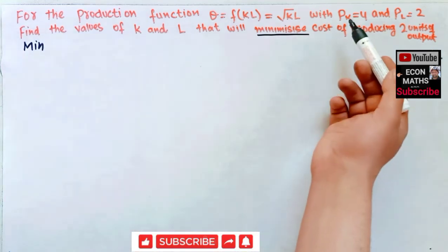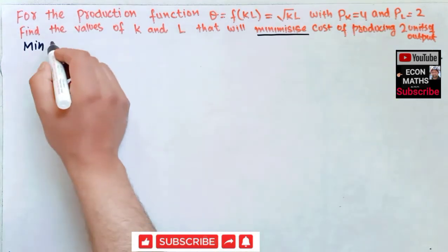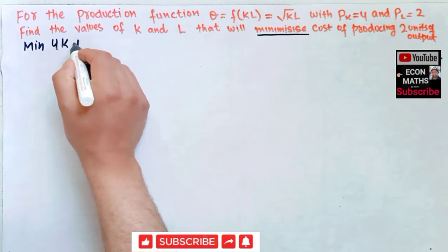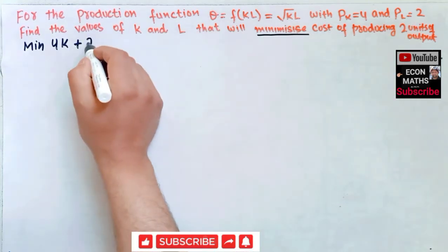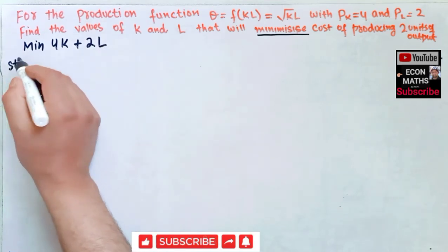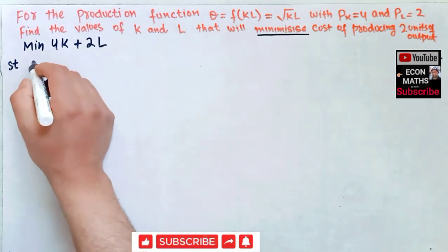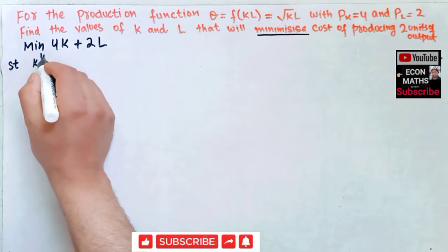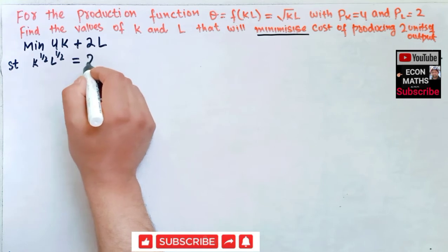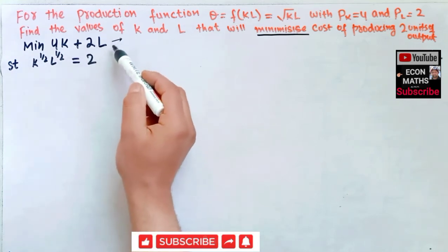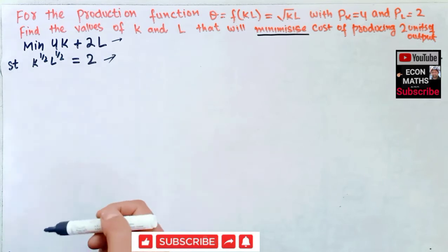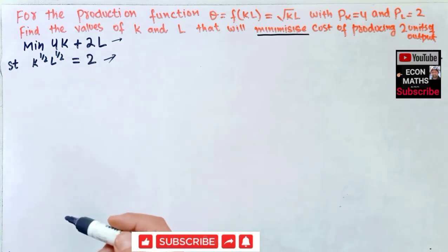The cost function is: price of capital times units of capital plus price of labor times units of labor, so we minimize 4K + 2L. This is subject to the production constraint K^(1/2) · L^(1/2) = 2, because we must produce two units with the given production function.